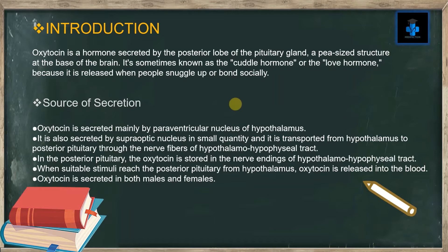Oxytocin is sometimes known as the cuddle hormone or the love hormone because it is released when people snuggle up or bond socially. Oxytocin is secreted mainly by the paraventricular nucleus of the hypothalamus.